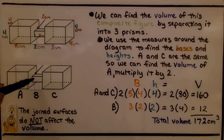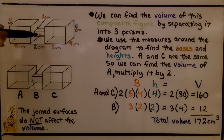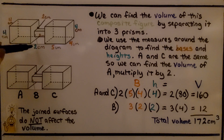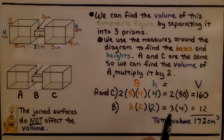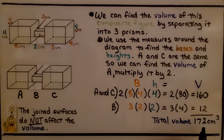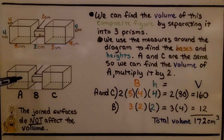For the prism marked B, the little one connecting them, we have a three centimeter by two centimeter base and a two centimeter height. So three times two is six, times two, equals twelve centimeters cubed. We add them together and get one hundred seventy-two centimeters cubed for the total volume. The joined surfaces do not affect the volume — the part where B joins A or C does not affect the volume.